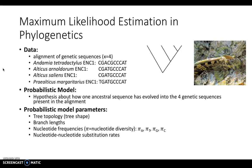Our data are four genetic sequences of the ENC1 gene, which codes the ectoderm neural cortex protein 1. This gene is commonly used in phylogenetic studies involving fish, and the sequences were obtained from the National Center for Biotechnology Information website. The fish are Endomea tetradactylus, Alticus arnoldurum, Alticus saliens, and Praealticus margaretarius — all comb-toothed blennies, the group I am studying for my master's here at the U. Alticus arnoldurum, Alticus saliens, and Endomea tetradactylus are air-breathing fishes that live their adult lives out of the water in the supralittoral zone. Pictured here is Alticus arnoldurum, the Pacific Leaping Blenny.